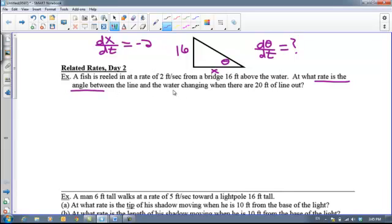And we want to find out when, how that angle is changing when the water, I'm sorry, when the line is 20 feet, when we have 20 feet of line out. That was hard for me to say, I don't know why. So eventually that's going to be 20, but I'm not going to freeze my picture yet. So we have to ask ourselves, self, what's the relationship between theta and 16 and x here?